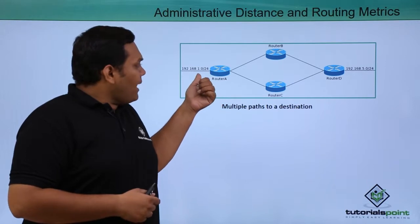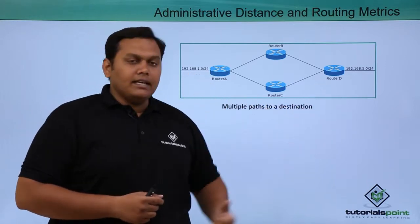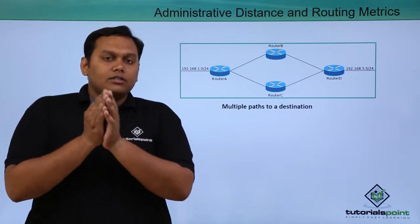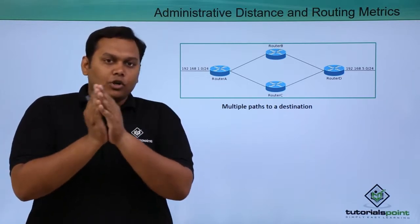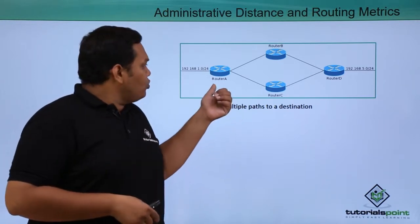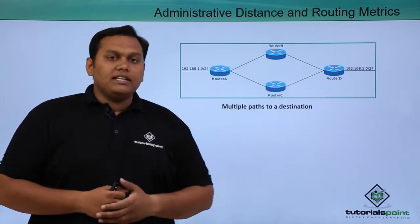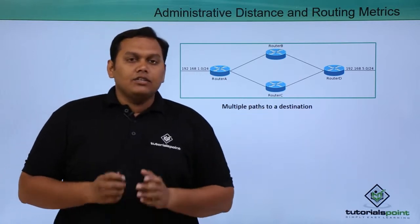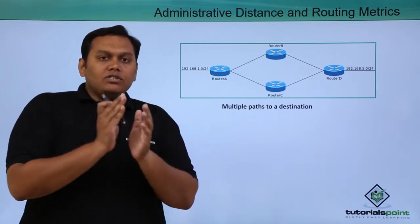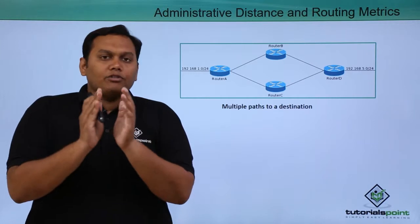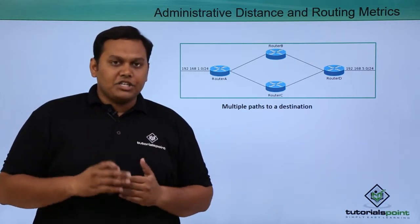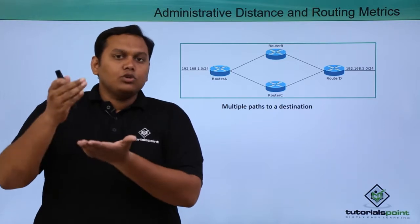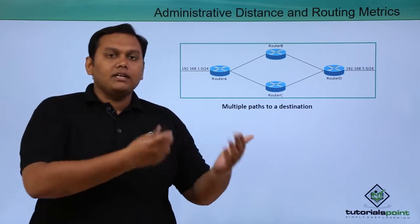From router A, the packet has to be transferred to router D. So how do we choose the best route? In a normal network, we may have two to three routes. Here, we have two paths to reach the destination: one through router B and the other through router C. When using multiple paths, you have to consider metrics, and after considering metrics, you use administrative distance to select the best route and update the routing table.